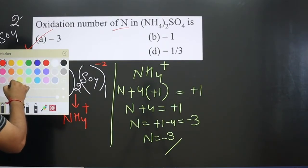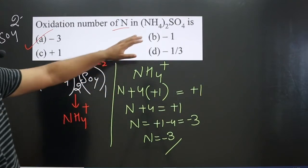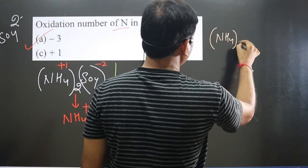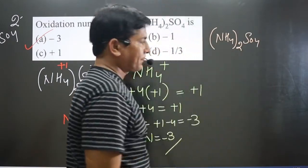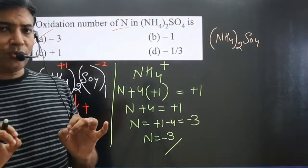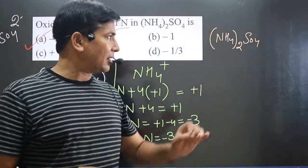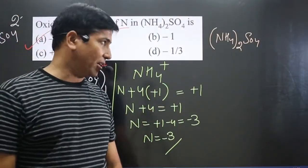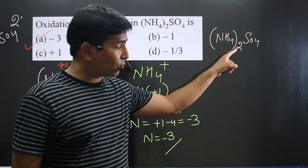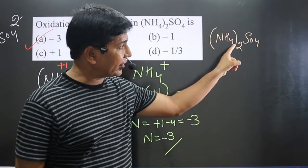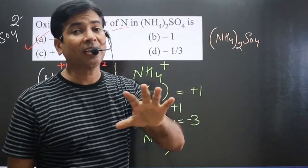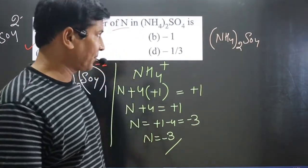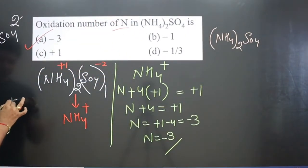Now let's look at another method. We have ammonium sulfate (NH4)2SO4. If we want to use the oxidation number of each element except nitrogen, we can also get the answer that way. There are two nitrogen, eight hydrogen, one sulfur, and four oxygen in the formula.